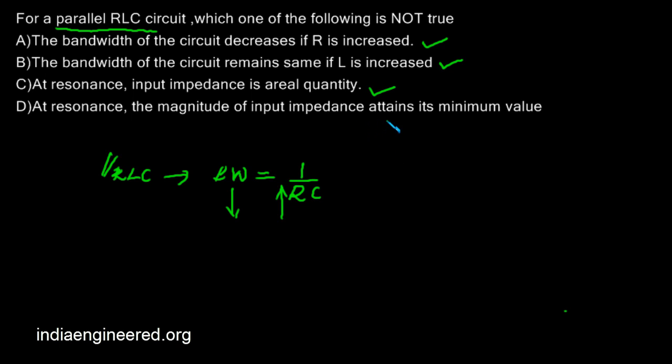So option D is the wrong one. We have to make sure which circuit is asked. It is a parallel RLC circuit. That's why option D is the correct option, but it is the wrong statement.